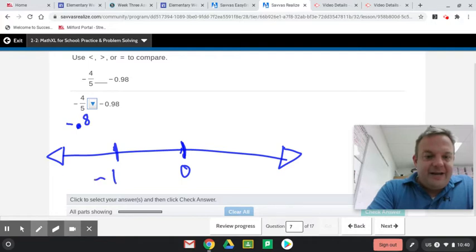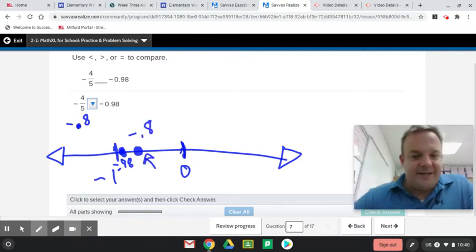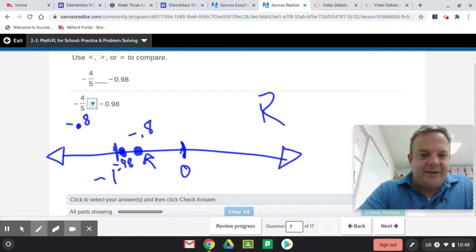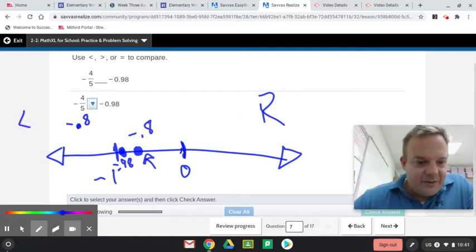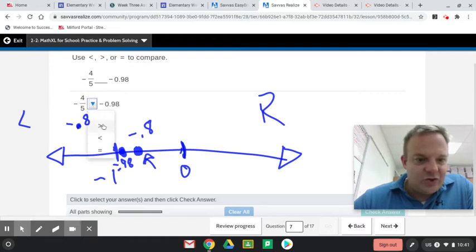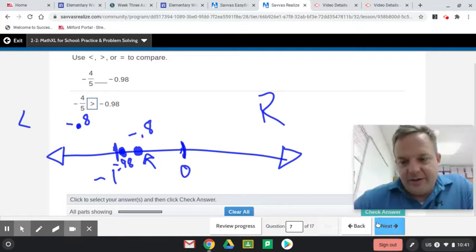Now, negative 98 hundredths would be right here, really close to 1. And negative 0.8 would be right about here. So this one is to the far right. To the right is greater. So we are going to make negative 4 fifths is greater than negative 98 hundredths.